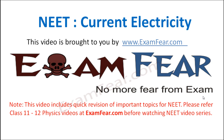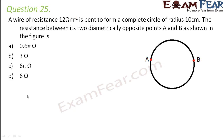This video on NEET current electricity is brought to you by examfear.com. Question number 25: a wire of resistance 12 ohms per meter is bent to form a complete circle of radius 10 centimeters. The resistance between its two diametrically opposite points A and B as shown in the figure is to be found. The resistance value given is resistance per unit length and we want to find the total resistance of this circle.